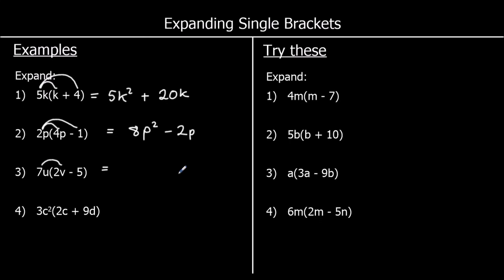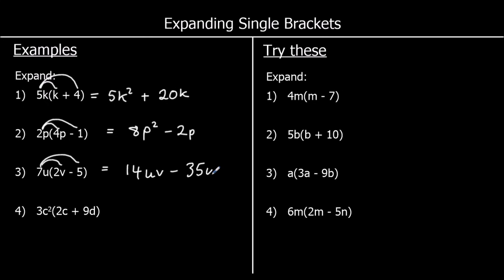The third one: 7u times 2v. We can do 7 times 2, which is 14, so we've got 14 times u times v, which is 14uv. Now we've got a positive times a negative, so it's going to be negative. We've got 7u times 5: 7 times 5 is 35, and it's times u, so we write that as 35u.